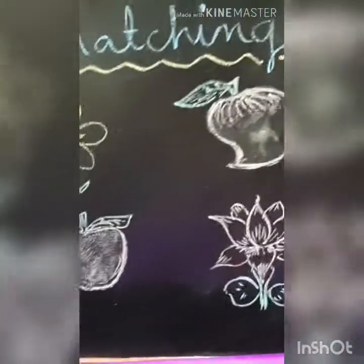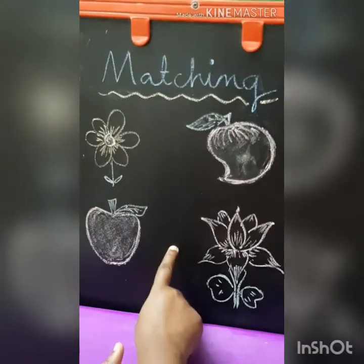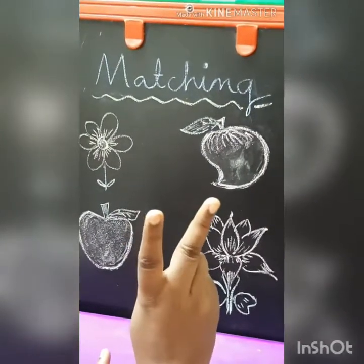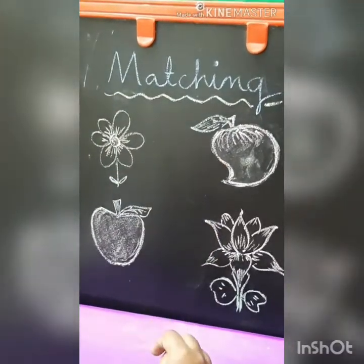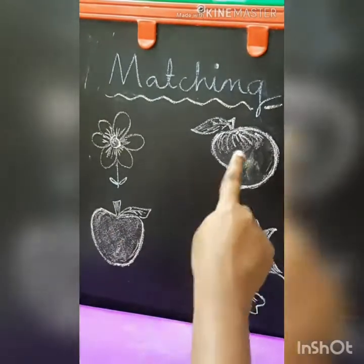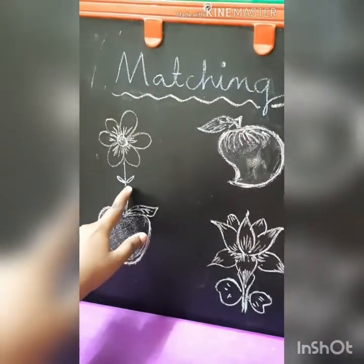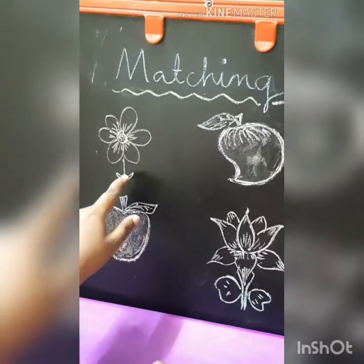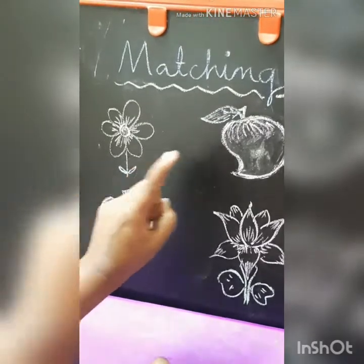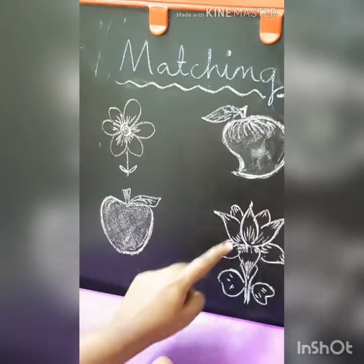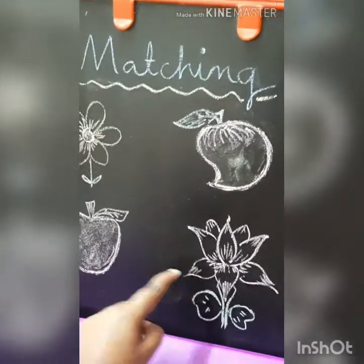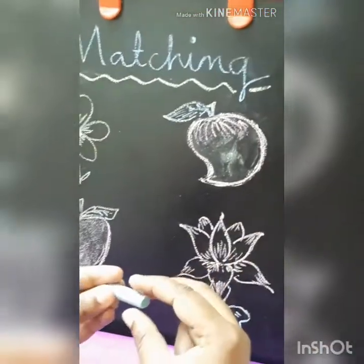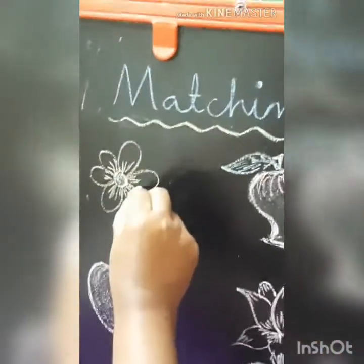Children, I came here with matching on two topics. What are the two topics we discussed? One is flowers and fruits. We are going to do the matching flower to flower, fruit to fruit. This is a flower. You have to find out the flower — where is it? Is this flower? No. Is this flower? Yes. So you have to match the flower to flower. Take the chalk. With these fingers, you have to match the flower to flower.